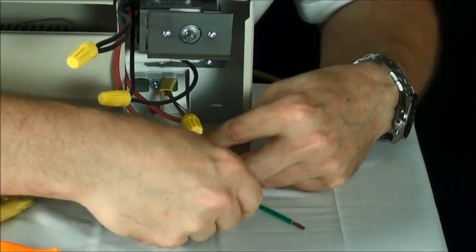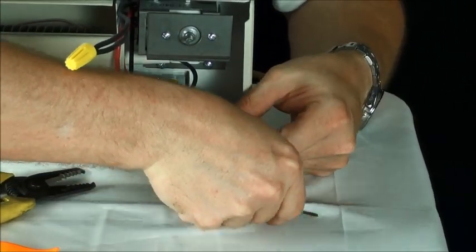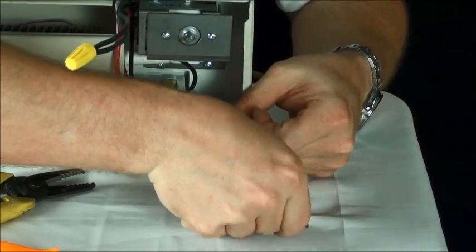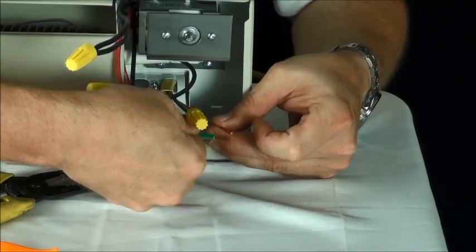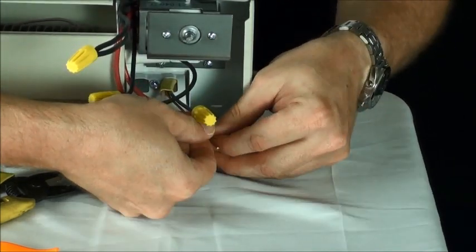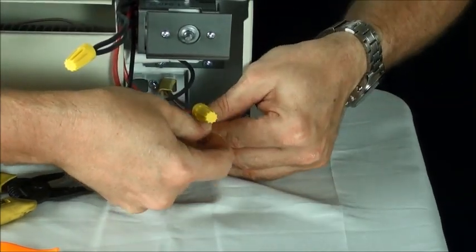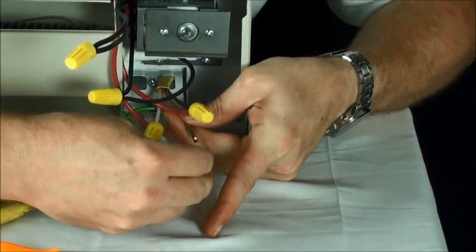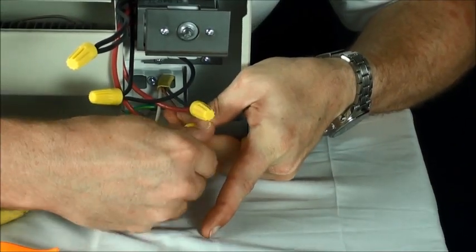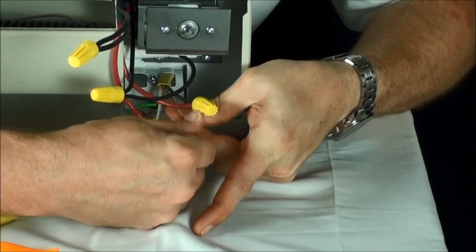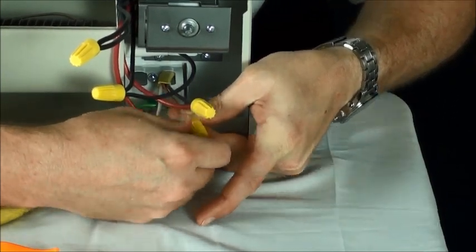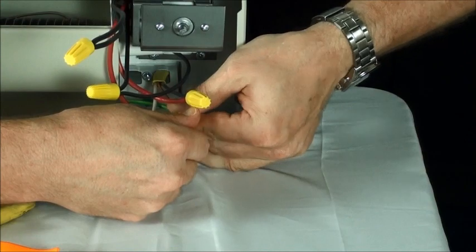Last but not least, you want to hook your grounds together. So all in all, you should have five wire connections if you're hooking up a double pole thermostat.